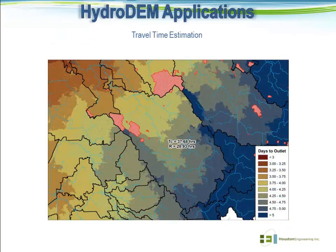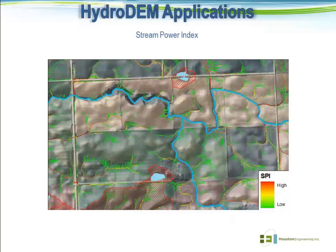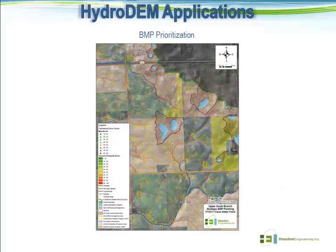One thing we've been using the hydro-DEM for on the hydrologic modeling side is that once we have accurate flow accumulation characteristics, we can relate that to things like land use and slope to determine our estimated travel time across that watershed, which helps us in developing input parameters for hydrologic models. When we get more into the water quality and BMP prioritization side of things, the stream power index is a very popular application in the state of Minnesota — where once we have an accurate hydro-DEM that can determine upland flow path characteristics, we can relate that to slope to determine the likelihood of erosion at different locations on the landscape. You can see a graphic here of BMP prioritization applications, showing flow paths across the landscape with overland flow characteristics ranked from green to red based on likelihood for erosion to occur.